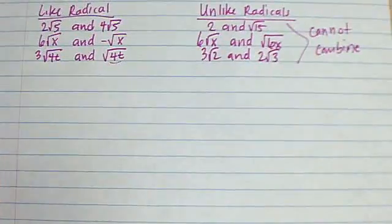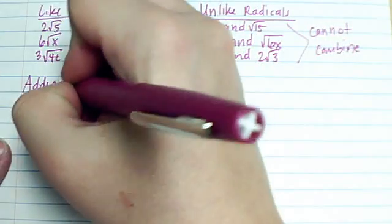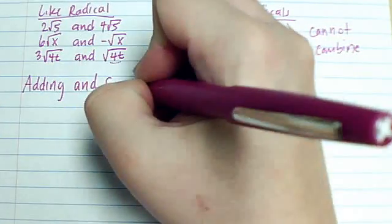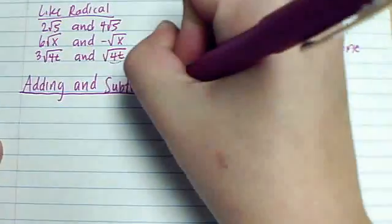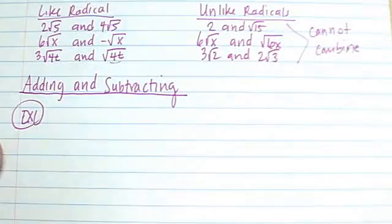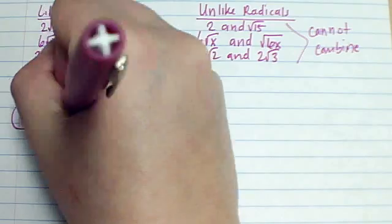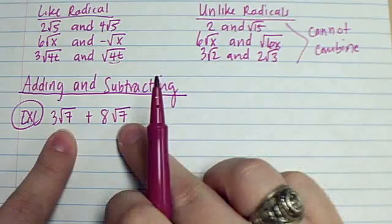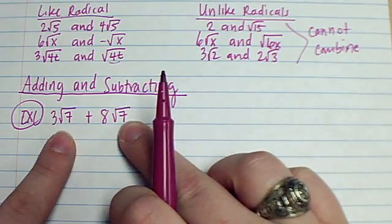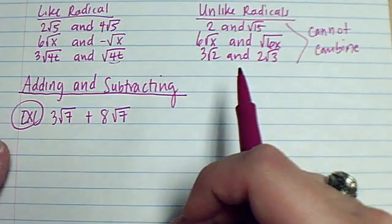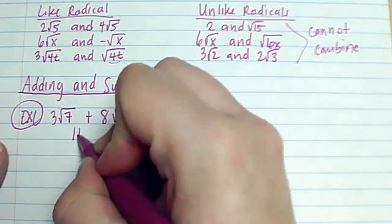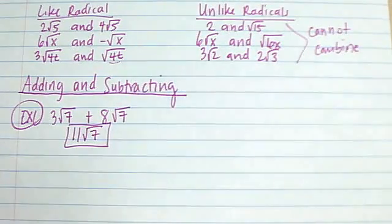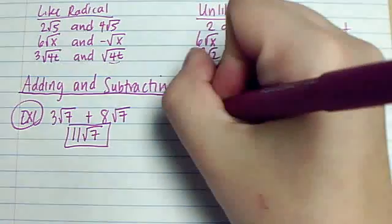Moving on, we're going to look at adding and subtracting. Example 1: if I have 3 root 7 plus 8 root 7 — what's underneath the square root is the same, so I'm able to add them. Just like with variables: 3x plus 8x, I would keep the x the same. So this would be 3 plus 8 is 11, and I keep root 7 the same. So 11 root 7 would be your answer.